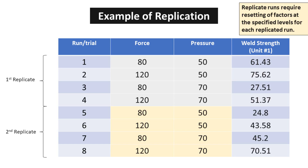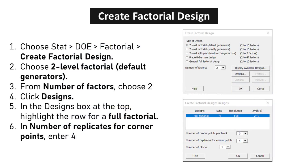In this example, there are two replications. Choose STAT > DOE > Factorial > Create Factorial Design. Choose two-level factorial, default generators. From number of factors, choose two. Click Designs. In the designs box at the top, highlight the row for a full factorial. In number of replicates for corner points, enter 4.